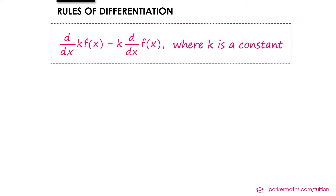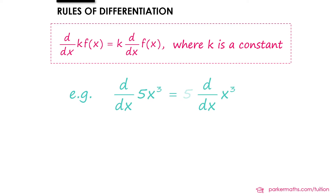We can easily illustrate this with an example. Suppose we want to find the derivative of 5x cubed. In this case 5 is the constant we're multiplying by, so we first differentiate x cubed and then multiply by 5. The derivative of x cubed is just 3x squared, so in total we get 5 times 3x squared, which is 15x squared.